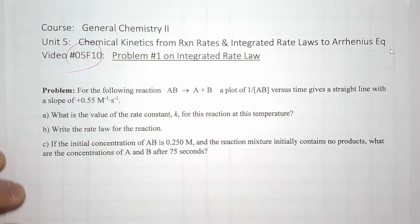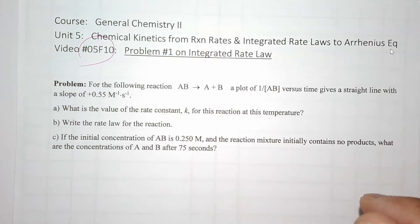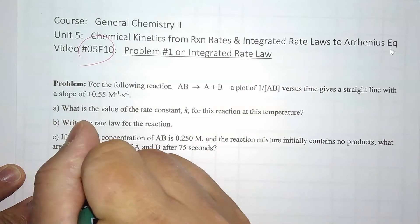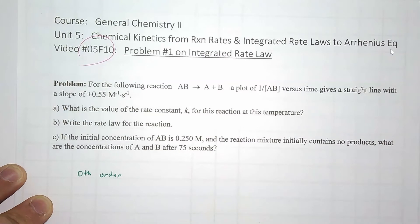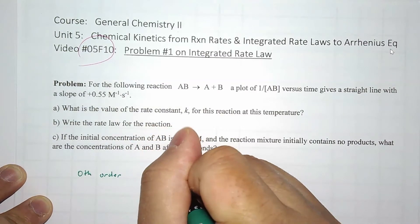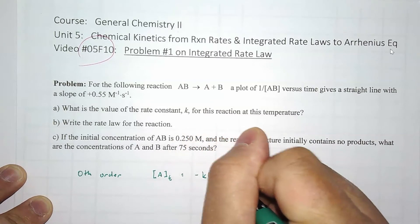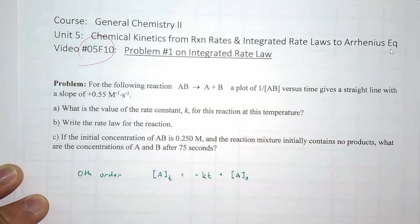So the integrated rate laws, there are three of them. Three that you need to remember. The first one is for zeroth order. And for zeroth order, it is [A]_t equals negative kt plus the initial concentration of the starter material.